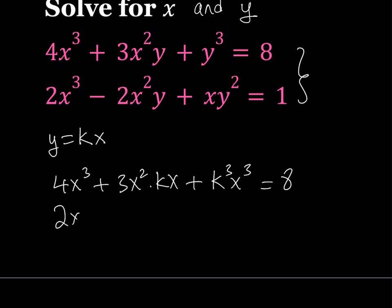In the second equation we get 2x³ minus 2x² multiplied by kx plus x multiplied by k²x². And that's equal to 1.